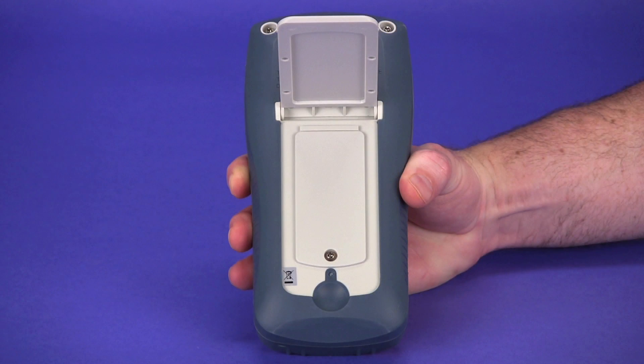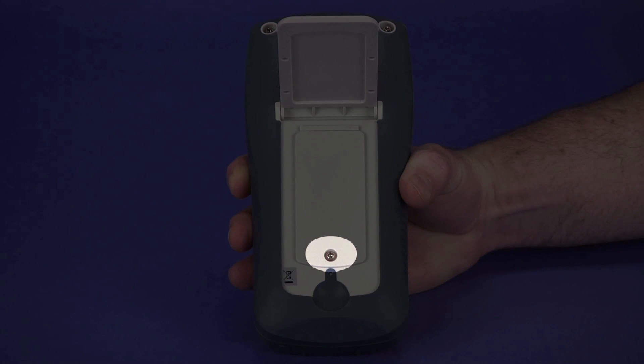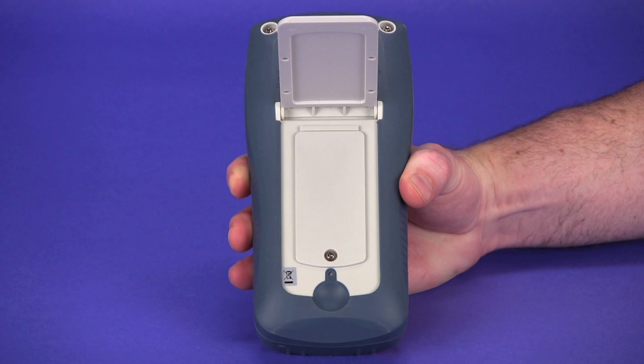Underneath the tilt stand is the battery compartment, accessible via a single screw. The separate battery compartment means you don't have to break a calibration seal to change the batteries.